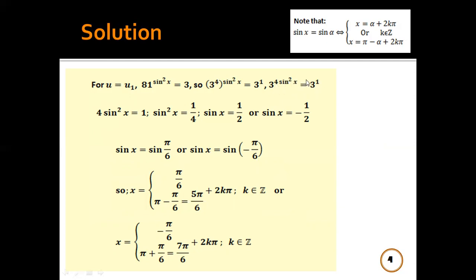Same base, so the powers are equal. Then 4sin²x = 1, so sin²x = 1/4. Therefore sin x = ±√(1/4), which gives ±1/2.